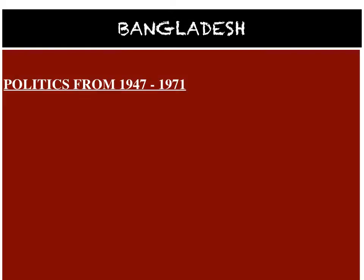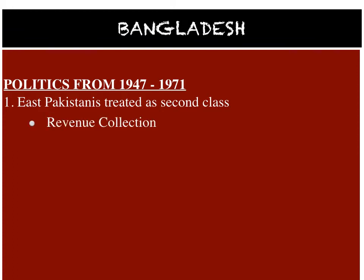If we talk about the politics of East Pakistan from 1947 to 1971, East Pakistanis were treated as second class. They faced various discriminations under Pakistan rule, and they struggled for independence. For example, the majority of revenue was collected from East, only one military regime was from East and the remaining were from West. In terms of language, Urdu was considered the state language, which caused problems since they used Bengali. In civil services, the focus was mostly on West Pakistan and administrative representation was also unfair.